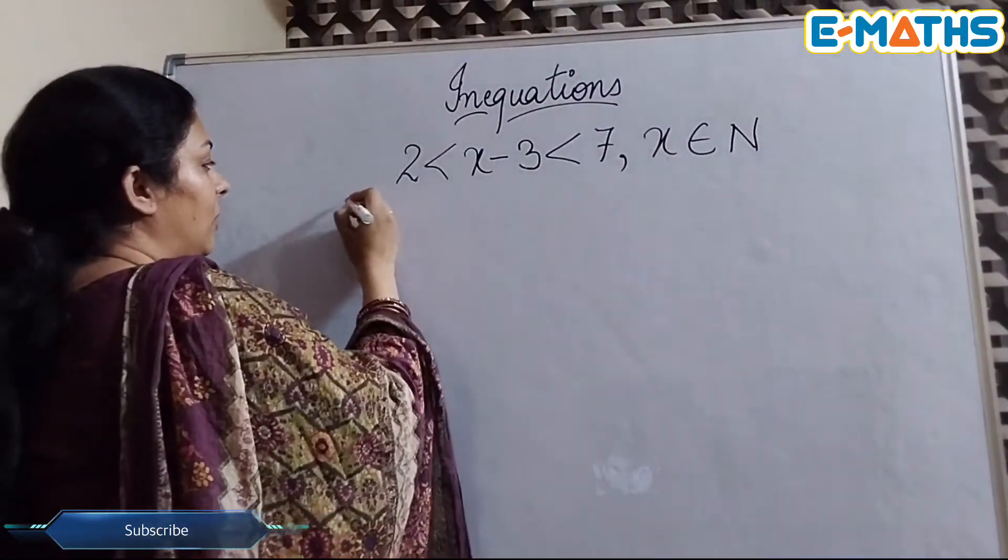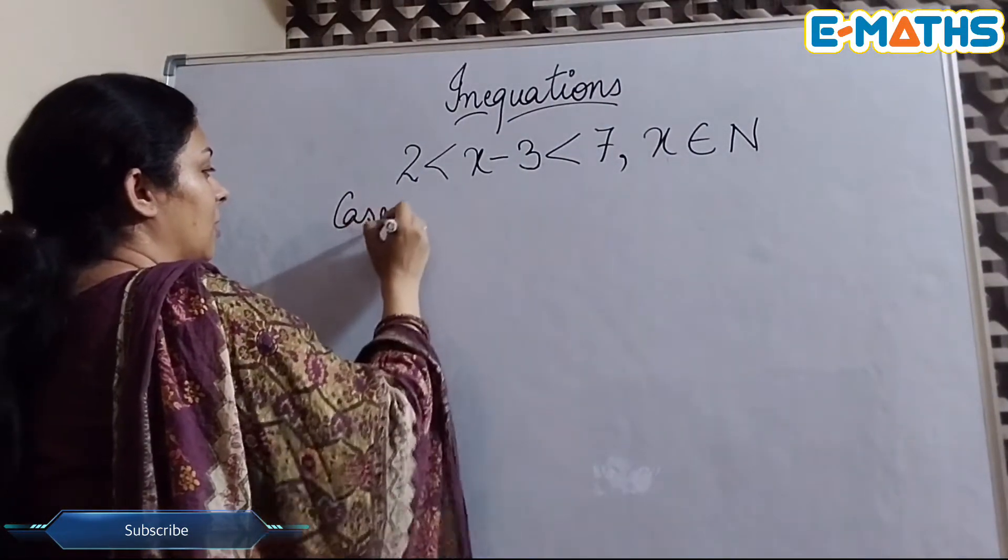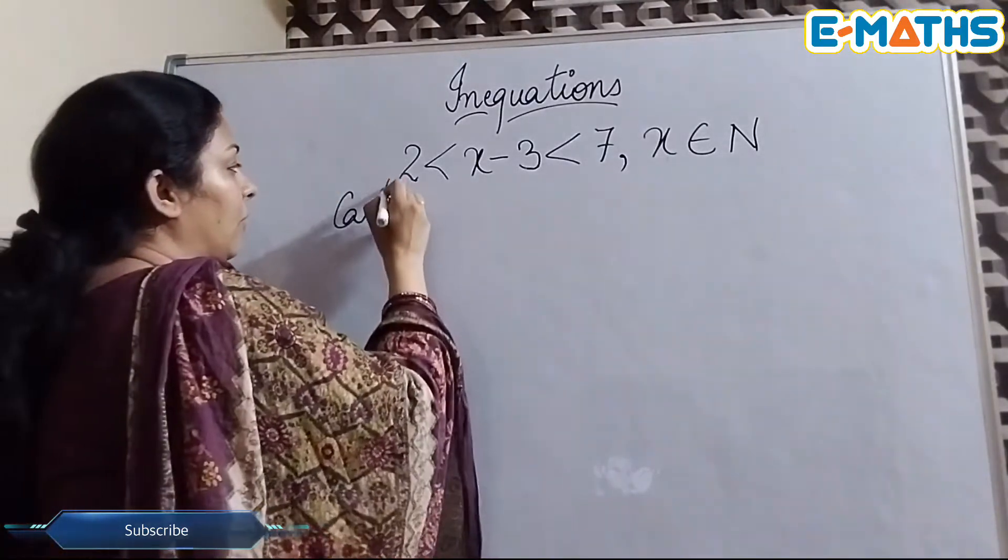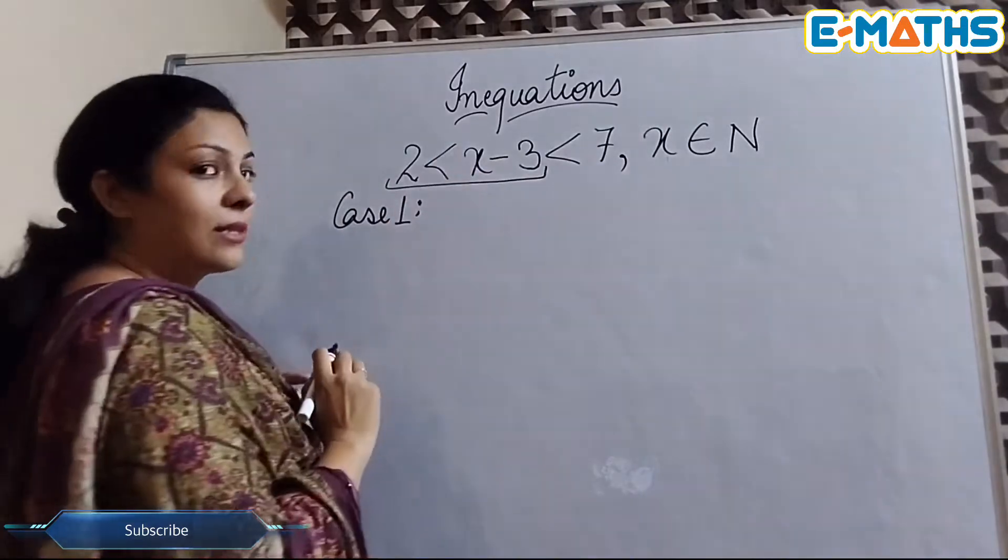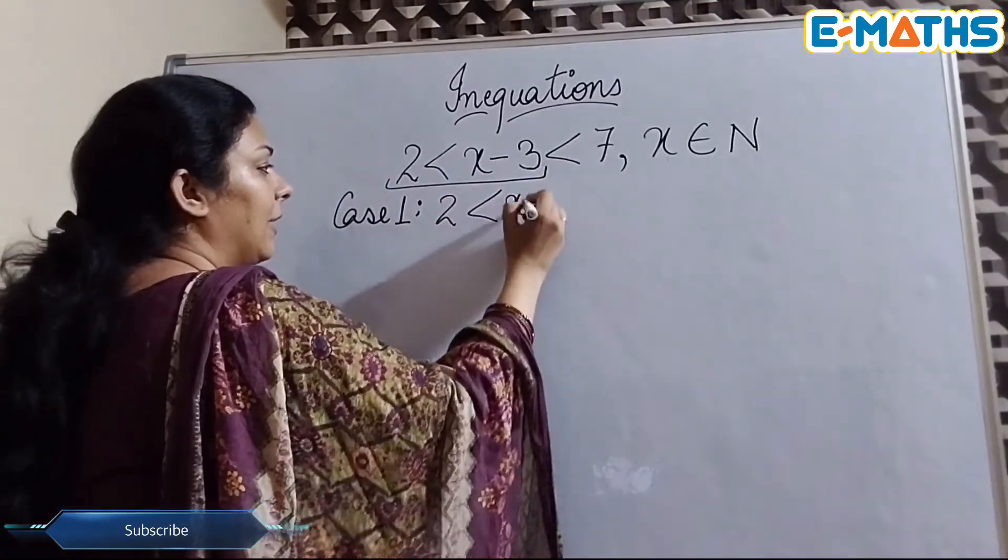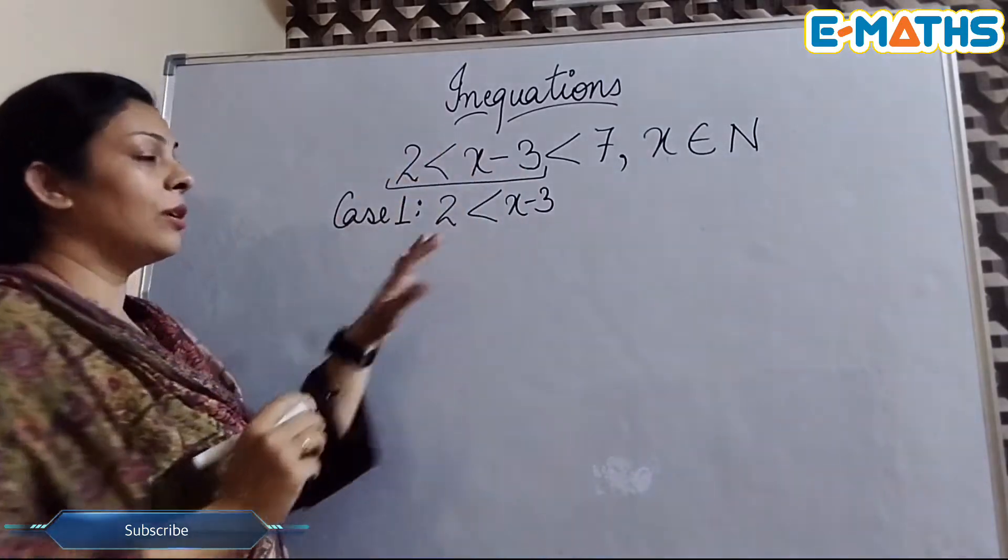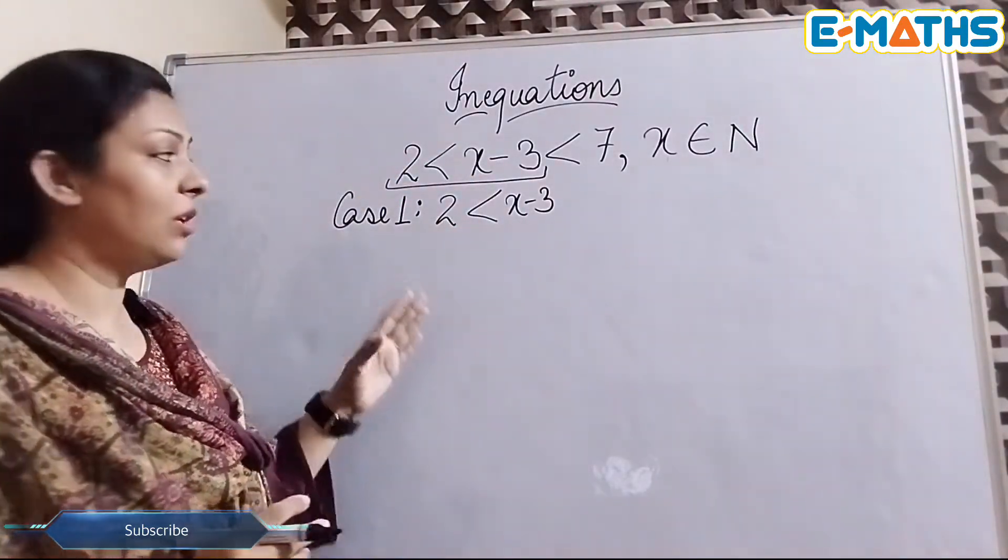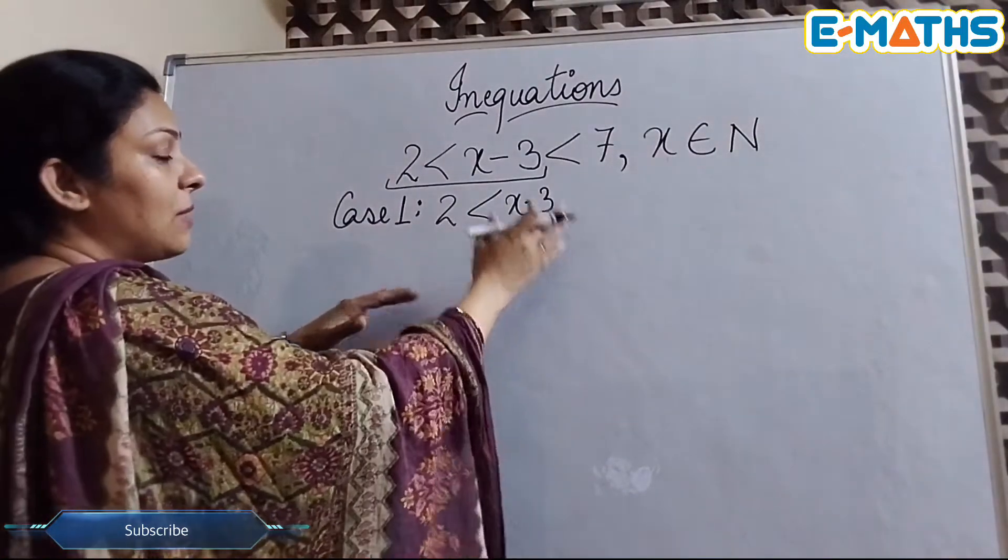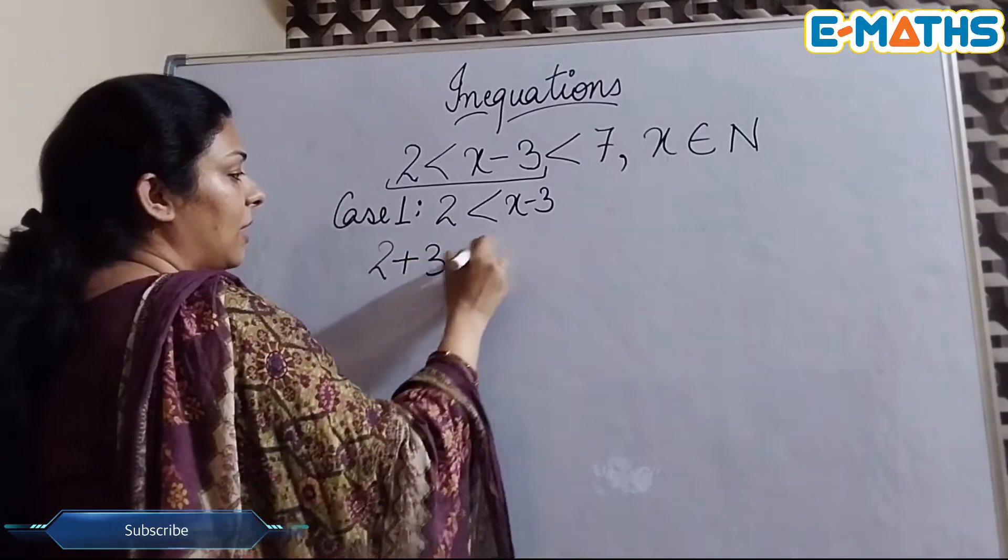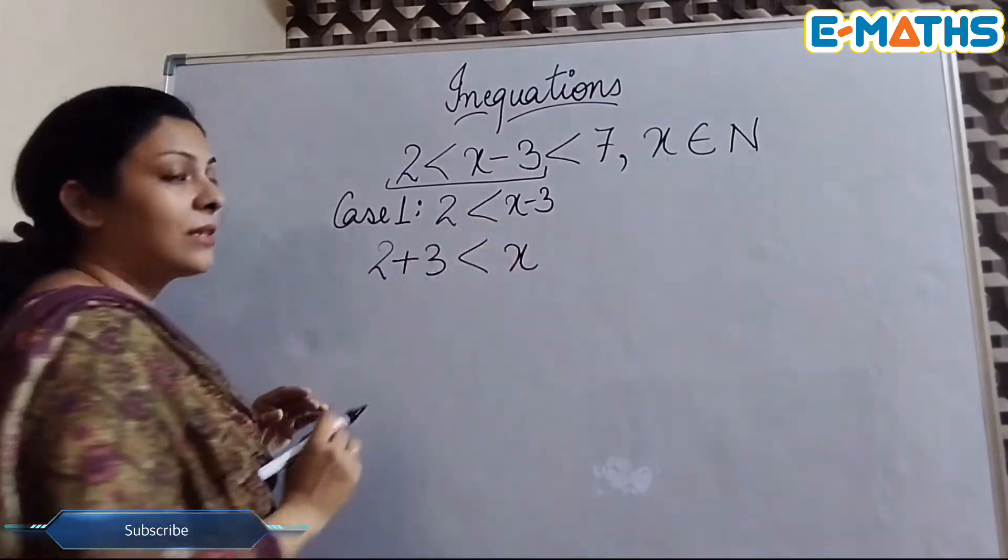So in this type of question we need to take cases. Case 1, I am going to take first two expressions. So here we have 2 < x - 3. We will solve it the way we have learned in transposition. So I will transpose this minus 3 on the other hand side. This will be plus 3 on the other hand side. x will remain the same.